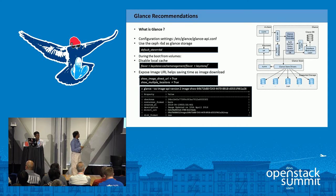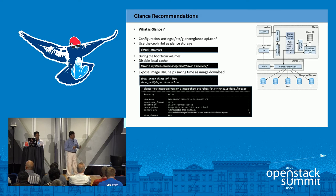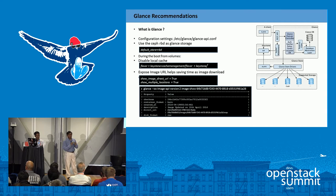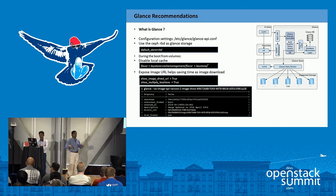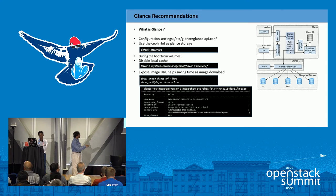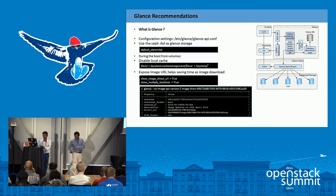The next important recommendation is to enable show_image_direct_url and show_multiple_locations. This helps in two ways: there is no download required if the direct URL is available, and no copy is required, because we know exactly where the image is stored. Here is an example of the direct URL: it looks like RBD, image ID, images — the full location is shown. Otherwise we need to go to Glance, ask for the image, keep downloading it, and keep it in local cache. So this provides significant time savings.